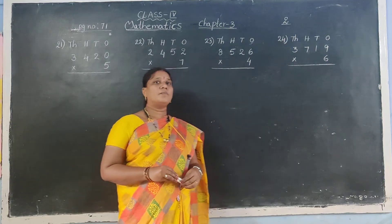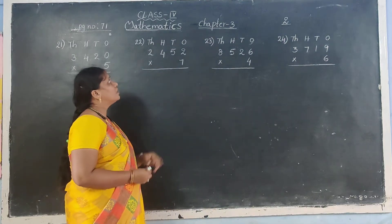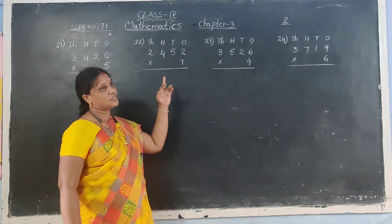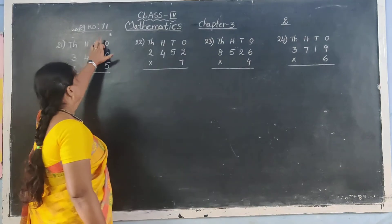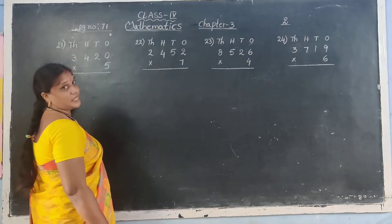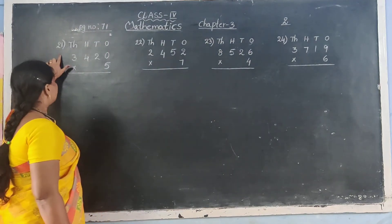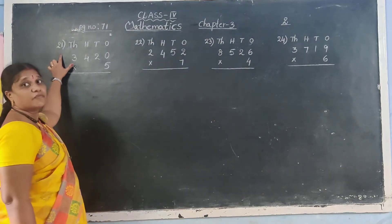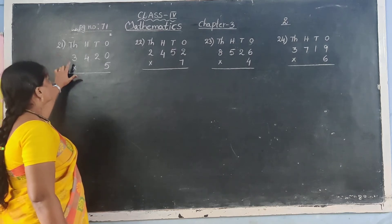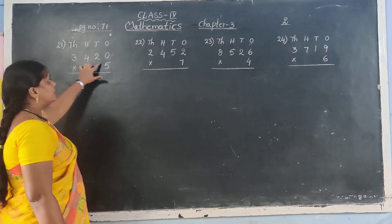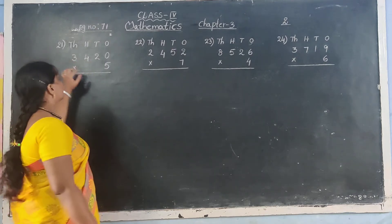Hello children, welcome back to Max class. 4th class, Marwanis Manna, chapter 3, page number 71, multi-educations. 21st sum: 4 digits multiply with 1 digit.